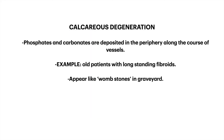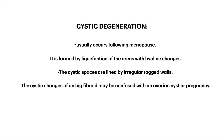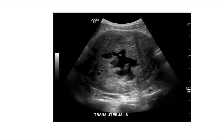In calcareous degeneration, phosphates and carbonates are deposited in the periphery along the course of vessels, seen in old patients with long-standing fibroids. They appear like worm-eaten stones in a graveyard. Cystic degeneration usually occurs following menopause and is formed by liquefaction of areas with hyaline changes. The cystic spaces are lined by irregular ragged walls, and cystic changes of a large fibroid may be confused with an ovarian cyst or pregnancy.